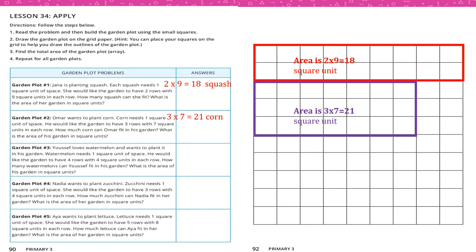Number 3: Yusuf loves watermelon and wants to plant it. Watermelon needs 1 square unit. He wants 4 rows with 4 square units in each row. So 4 times 4 equals 16 watermelons. We draw 4 rows with 4 squares each — total area is 16 square units.